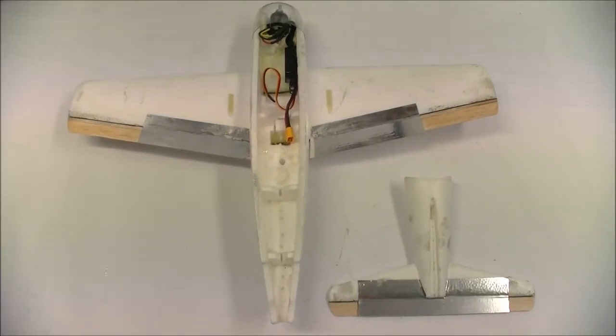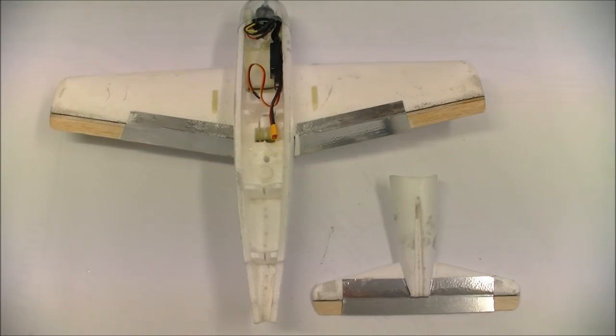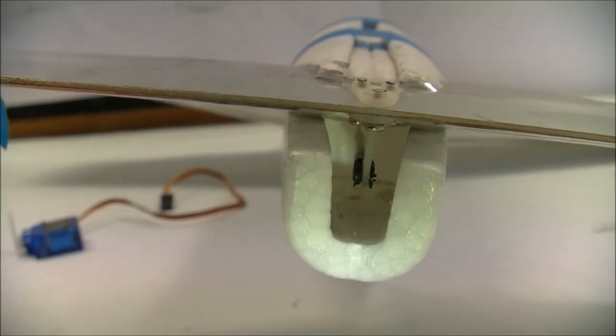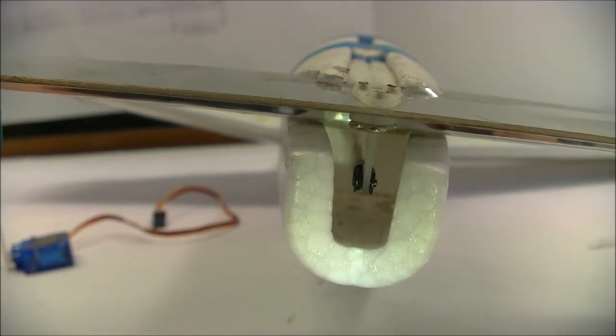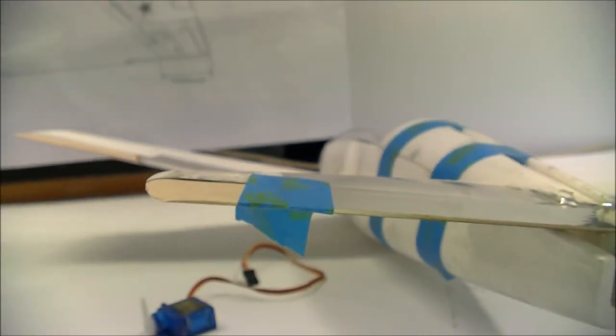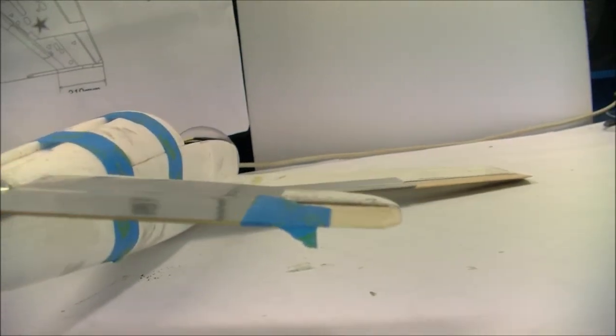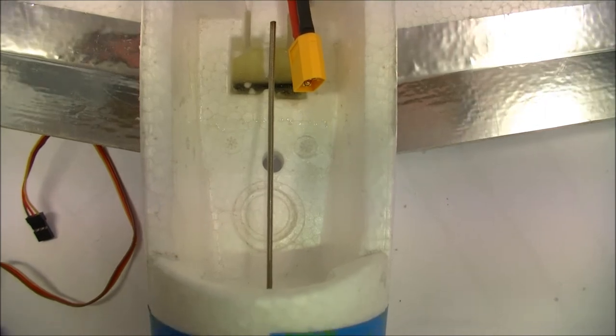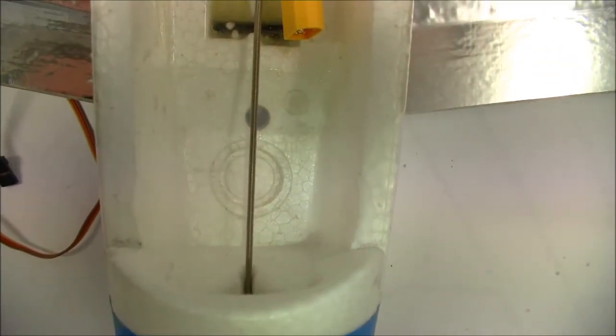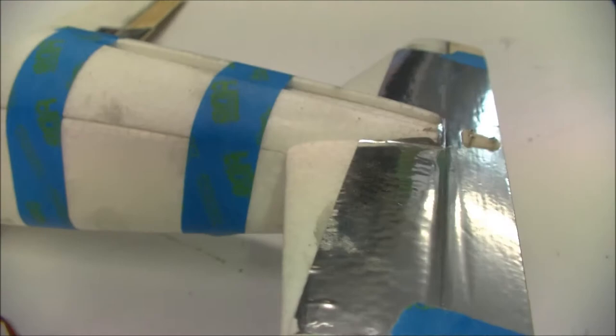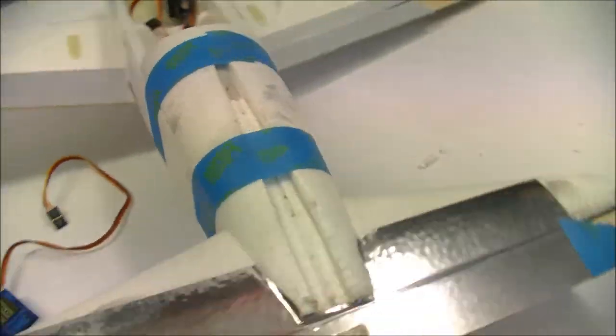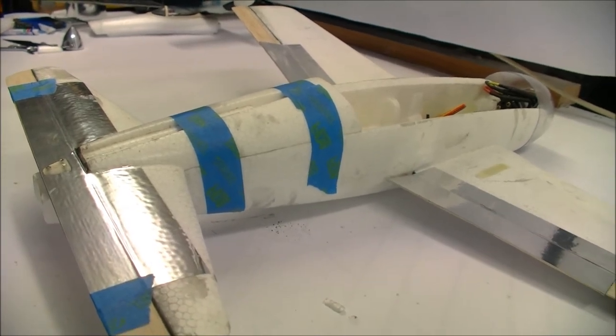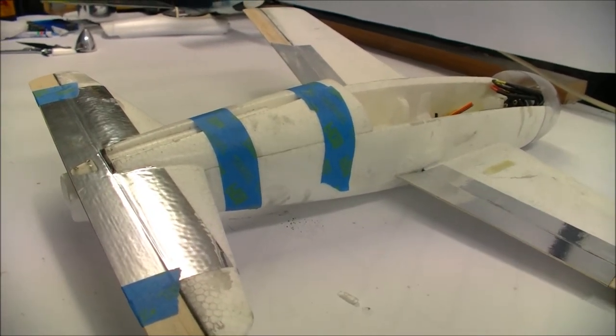The next step now is to attach the control horns and install the servos. The elevator control horn is now in place with the pushrod attached. I've taped up the elevator in the neutral position. This is so I can get the correct length of the pushrod before I cut it, but after I've installed the servo. You'll also notice that the empennage is only taped on. This is the way it will stay until the servo is in and been tested with the elevator, then it will be glued on.